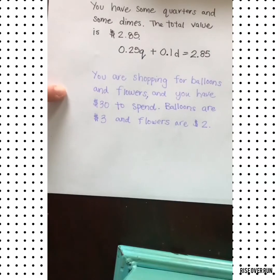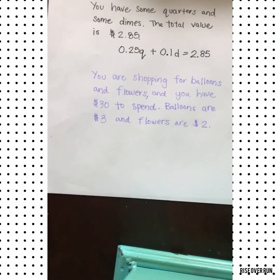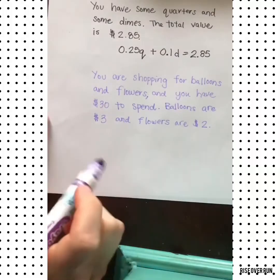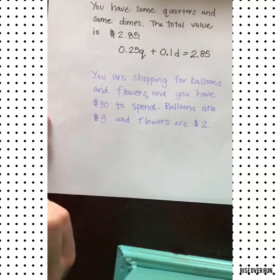Let's look at this situation. You are shopping for balloons and flowers and you have $30 to spend. Balloons are $3 and flowers are $2. So let's try to write an equation to represent this relationship.